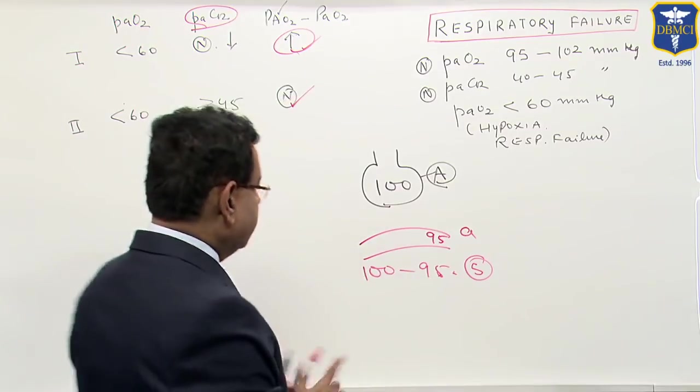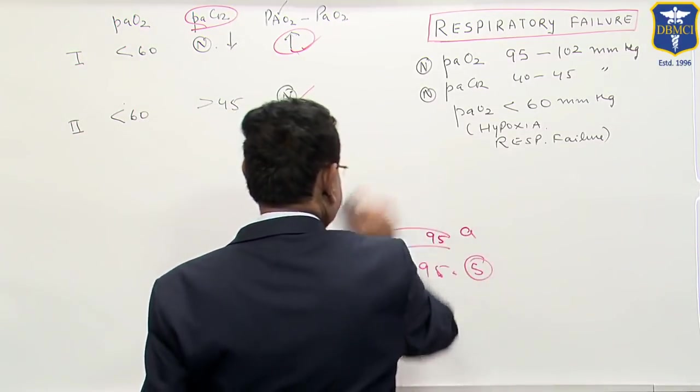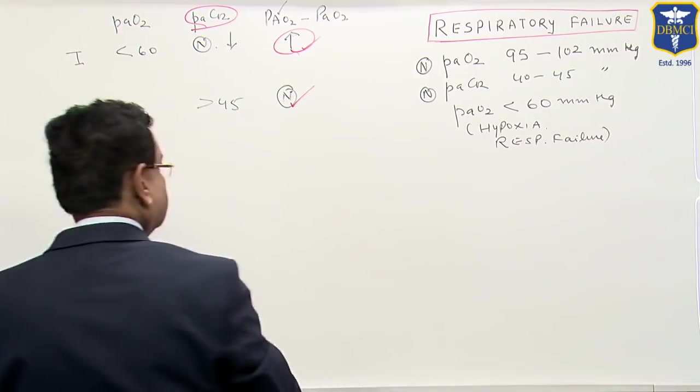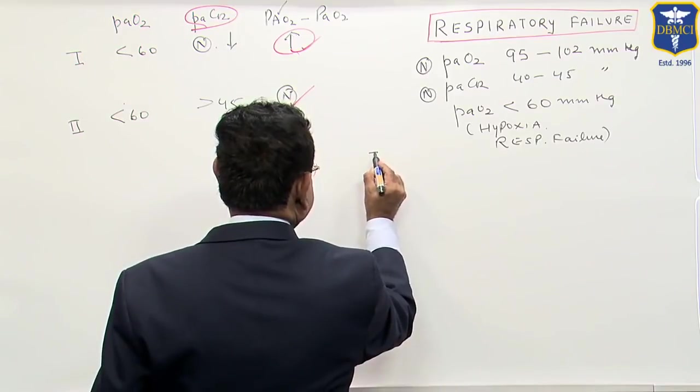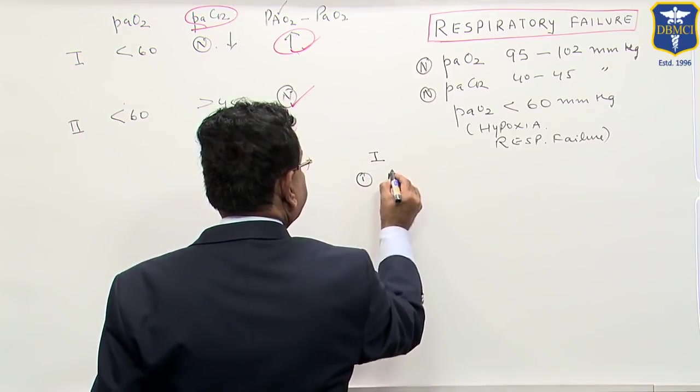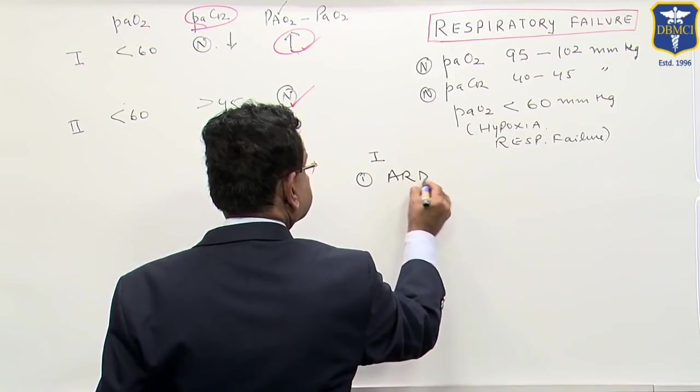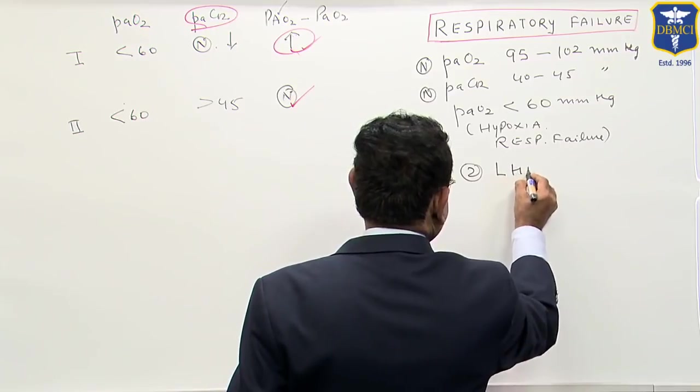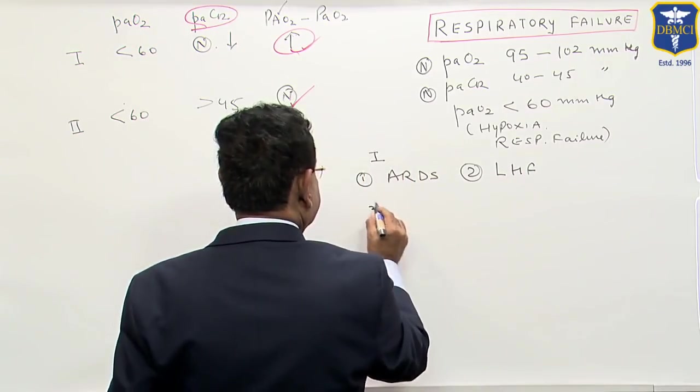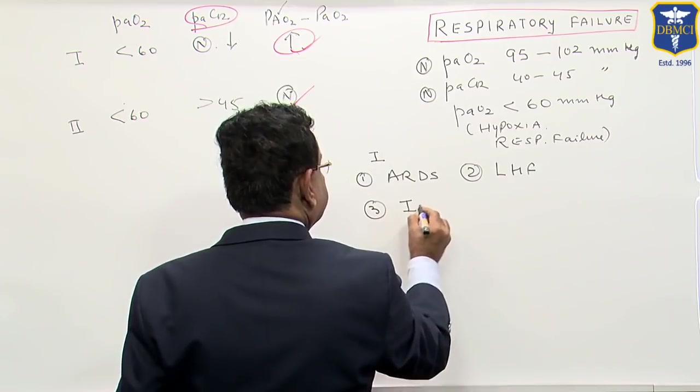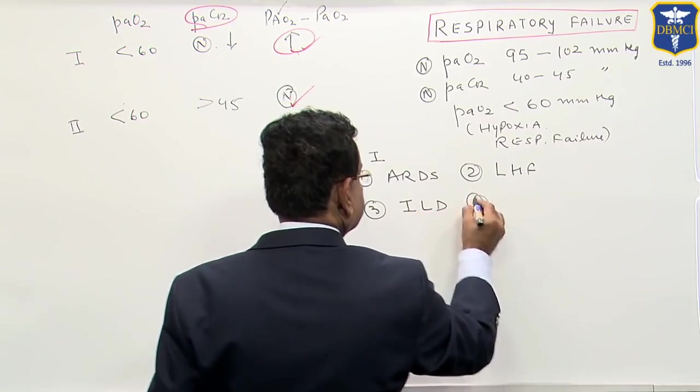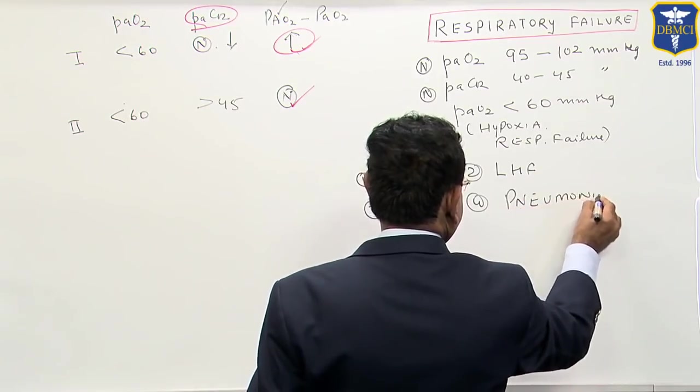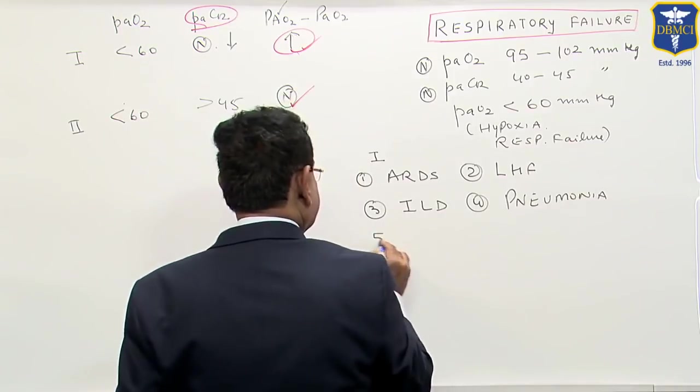Now, let us see what are the causes of type 1 respiratory failure. The causes of type 1 are ARDS, left heart failure, interstitial lung disease, pneumonias, bronchial asthma.